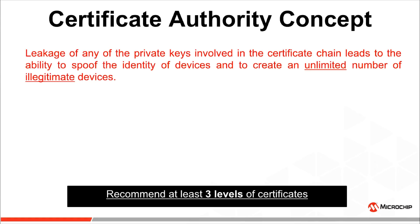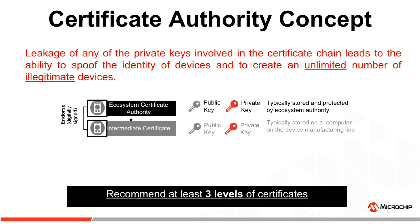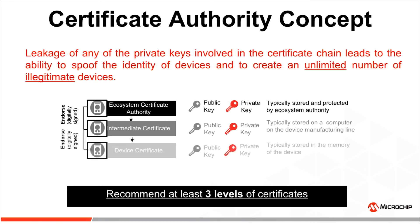To build a chain of trust, we recommend at least three levels of certificates. The highest level is the ecosystem certificate authority, typically stored and protected by the ecosystem authority. The second level is the intermediate certificate, stored on a computer on the device manufacturing line — that's where possible security flaws could occur. And finally, the lowest level is the device certificate, typically stored in the memory of the device, which is another possible place for security flaws.